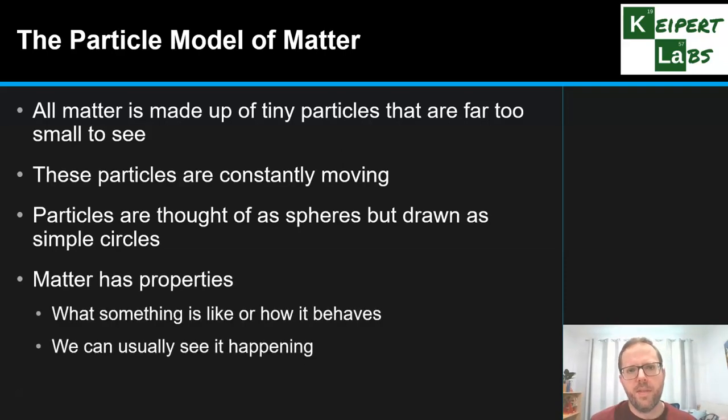And so this matter, the substances that are made up of these tiny particles have properties. What we mean by properties is what something is like or how it behaves. And properties are usually something we can see or observe happening with our own eyes or our senses. Whether something is hard or soft, whether it's brittle or whether it's flexible, whether it's strong or weak,